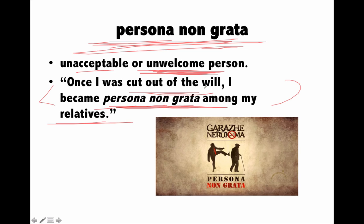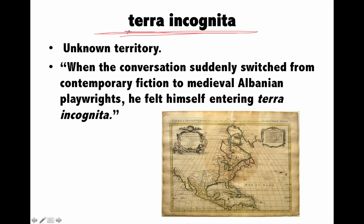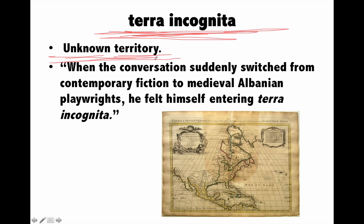Next is 'terra incognita', meaning unknown territory. It can be used physically or philosophically. For example, if you know a lot about ancient history but nothing about modern history, modern history is a terra incognita for you — an unknown territory. For example, when the conversation suddenly switched from contemporary fiction to medieval Albanian playwrights, he felt himself entering terra incognita.